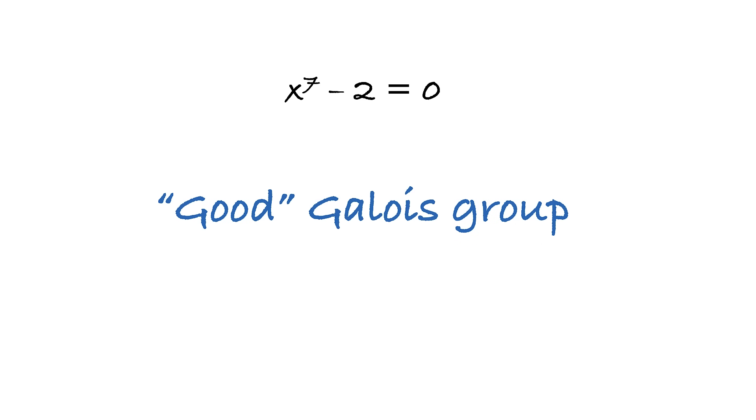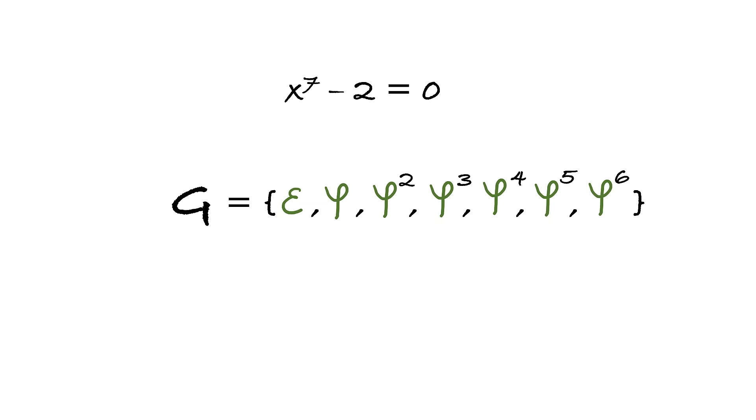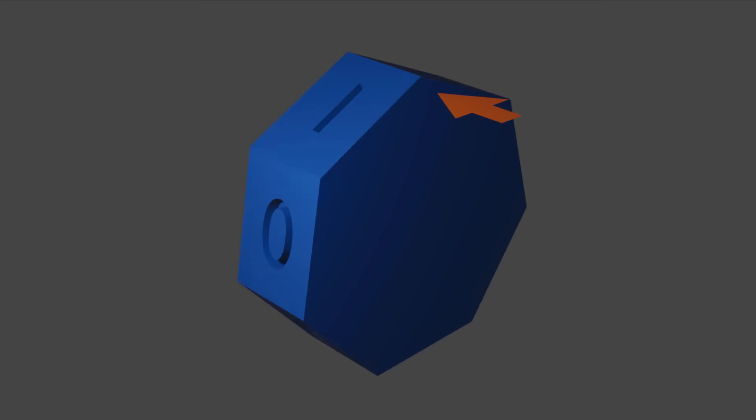So this is a good Galois group, good in a sense that the corresponding equation is solvable by radicals. Groups like this one are called cyclic as you can cycle through all the symmetries in the entire group by applying just one symmetry over and over again.